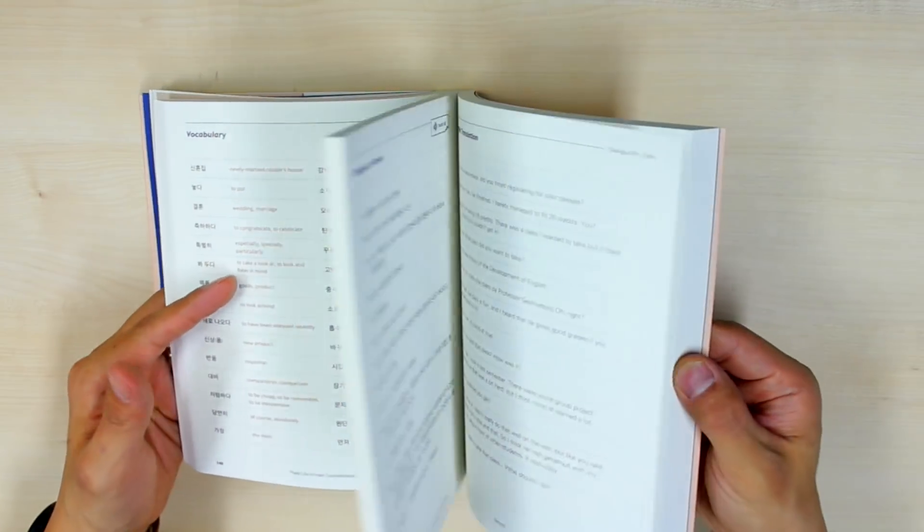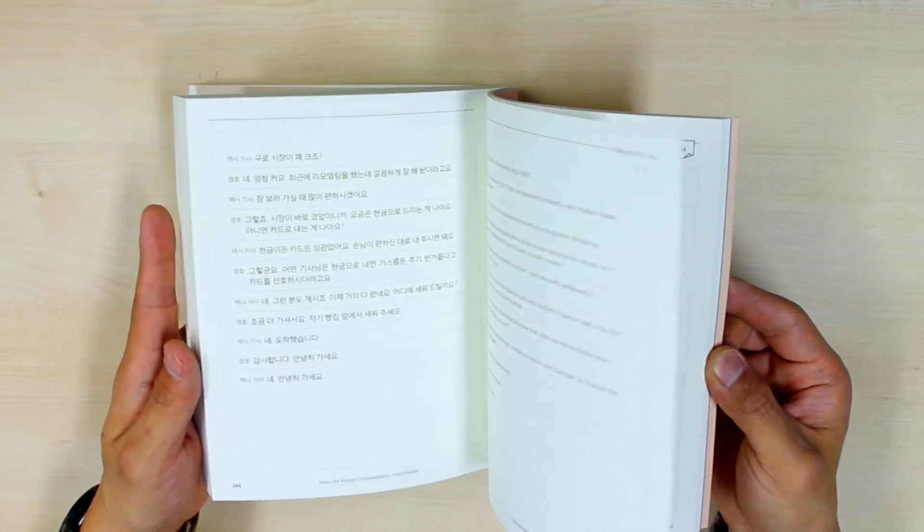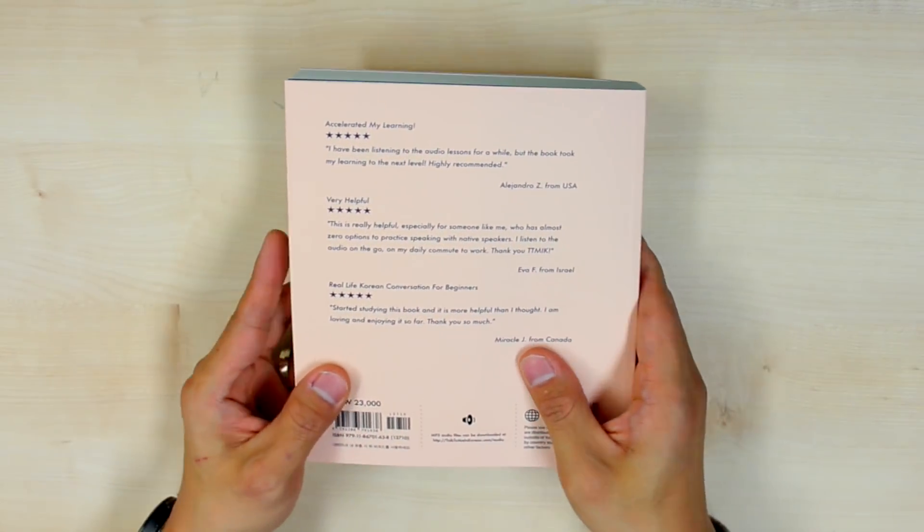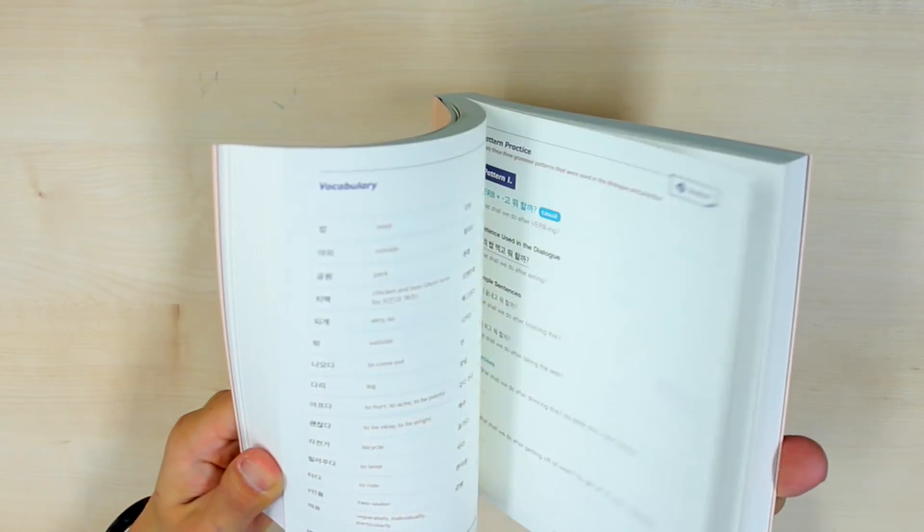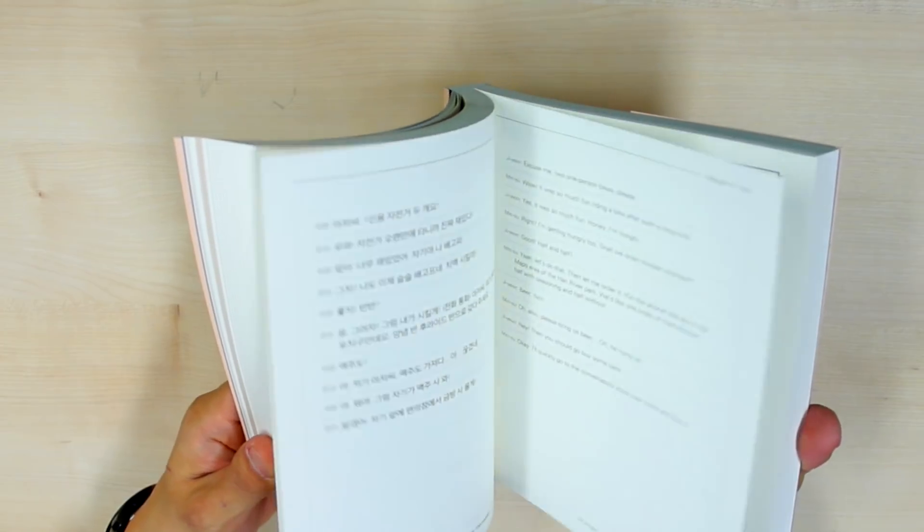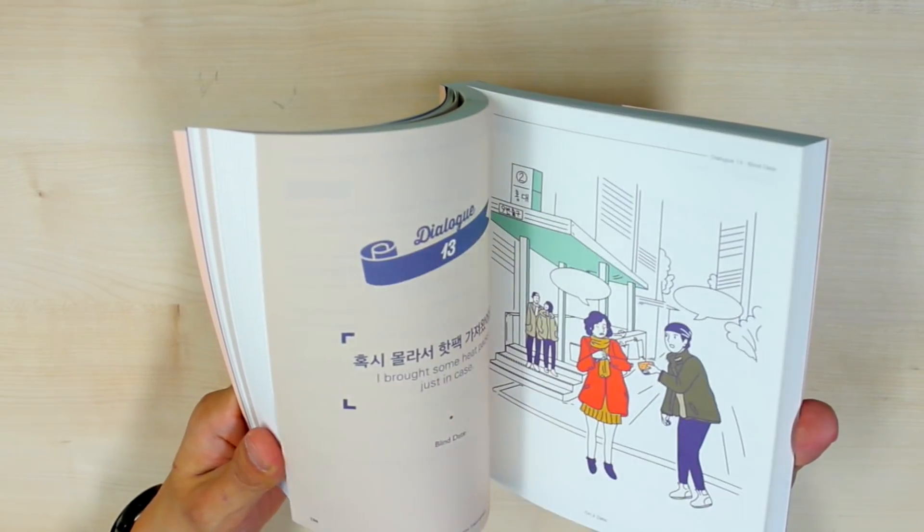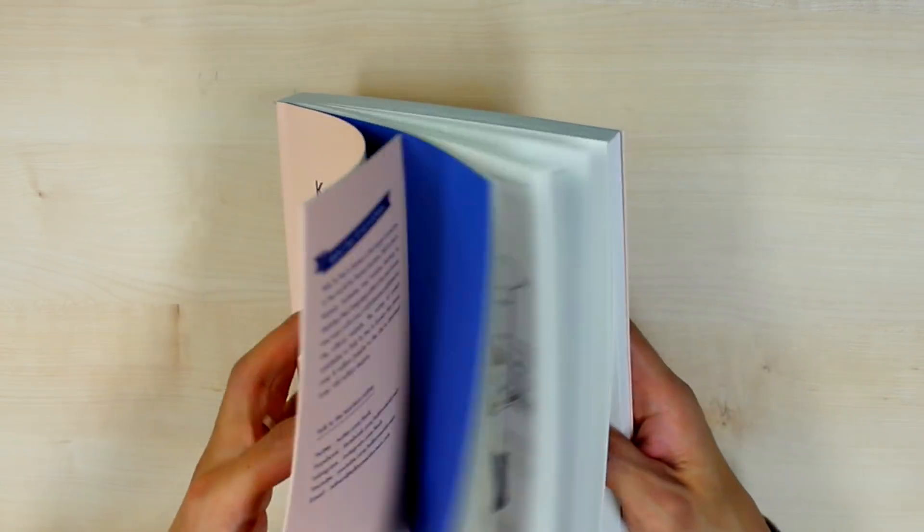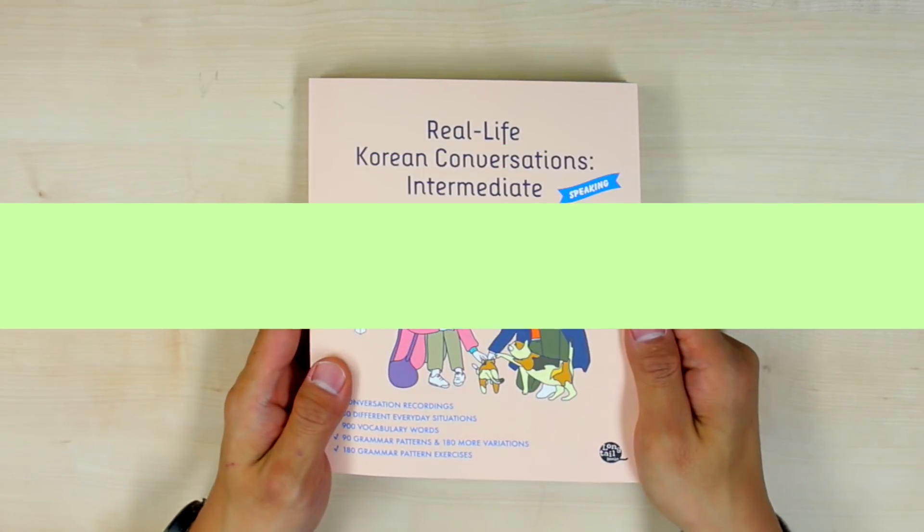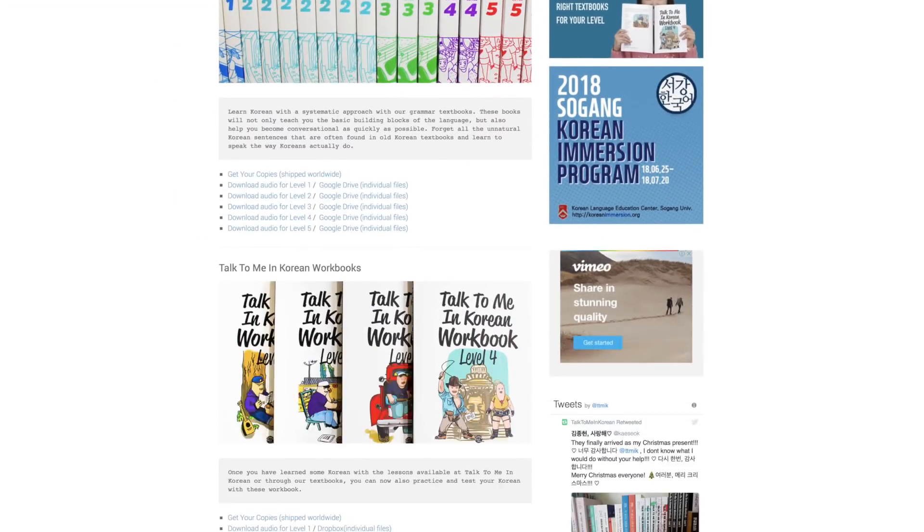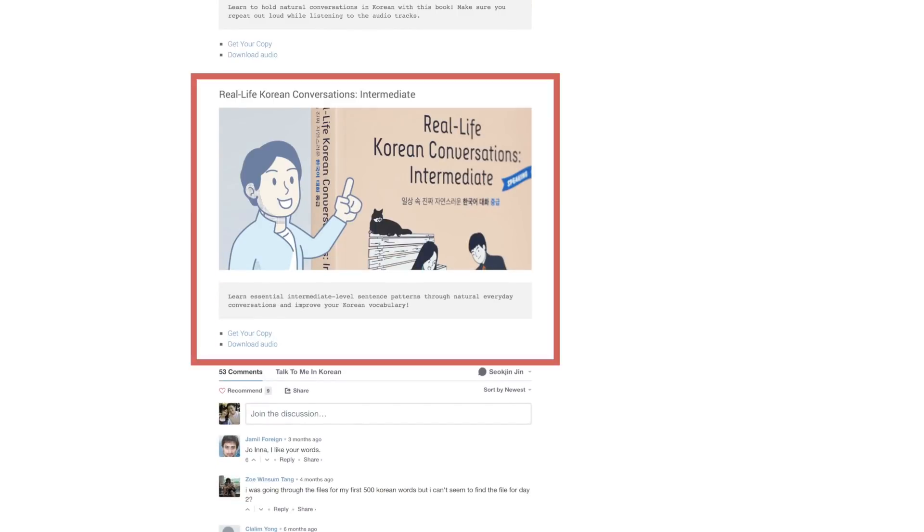And we have all these great conversations as well. So you can download all the audio files for each of the lines here, as well as the vocabulary words and the patterns and also the sample sentences using the patterns on our website for free. So go to talktomeinkorean.com slash audio and you can download the audio tracks for this book.